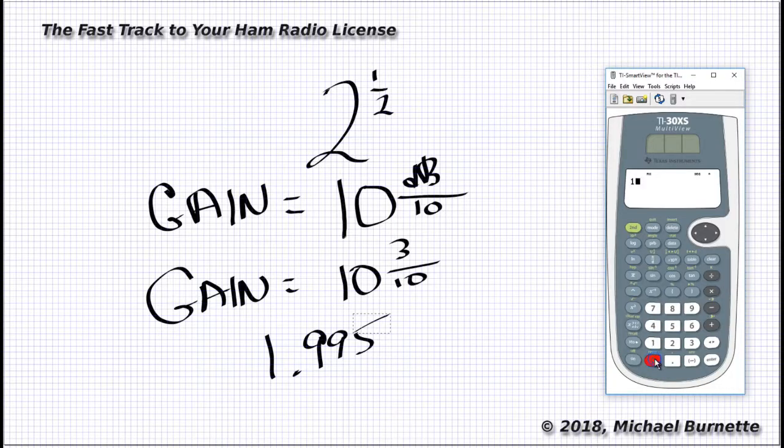Now, all that is a mathematical way of saying something that you're probably familiar with, and that is that a 3 dB increase in signal strength requires approximately a doubling of power.